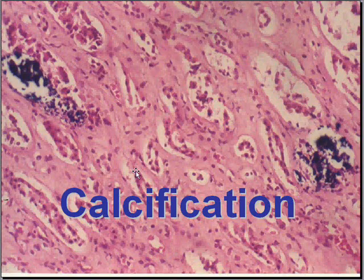Last but not least, very common in chronic fibrotic long-stage inflammatory processes is calcification. Calcium often looks like a little shattered crystal, very dark blue. And if it's large enough, it's usually not in macrophages at all.